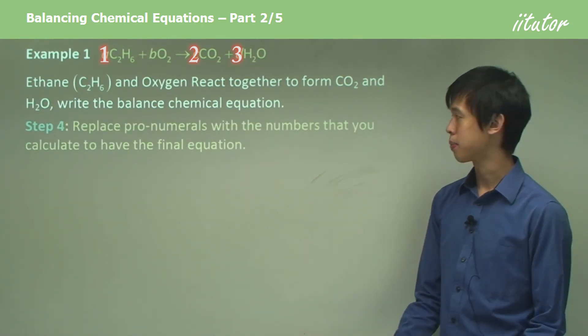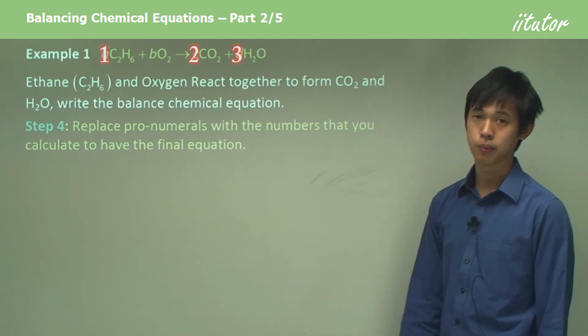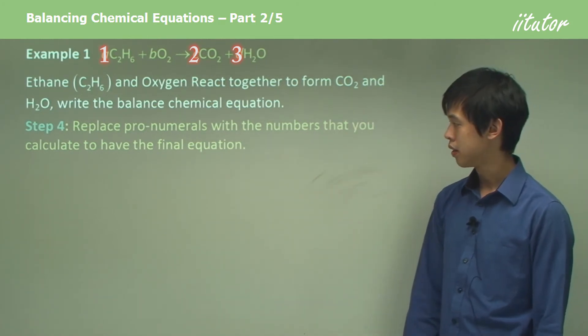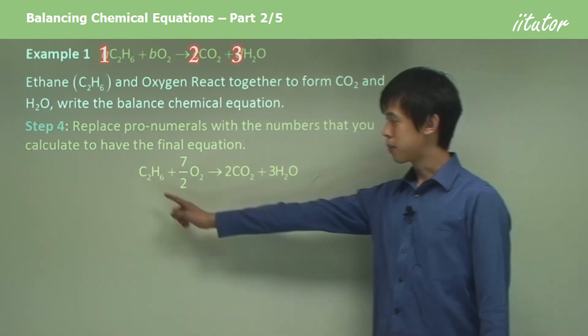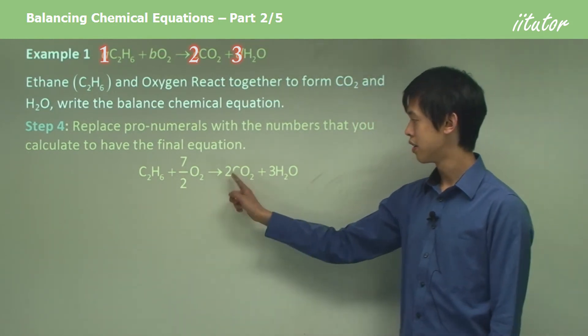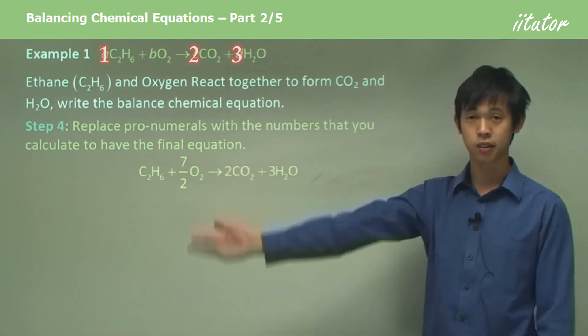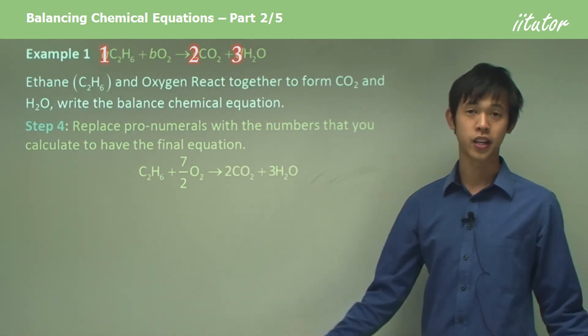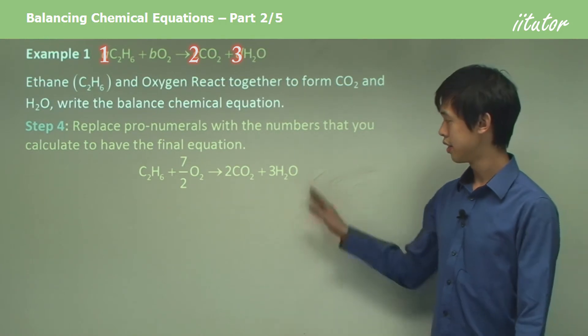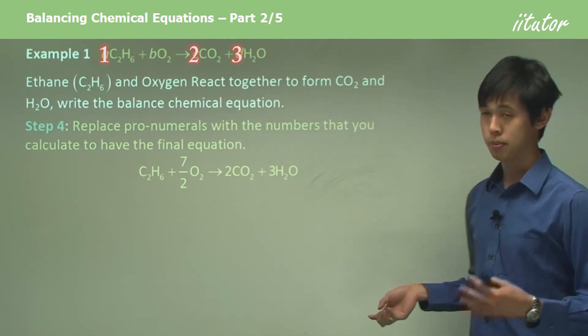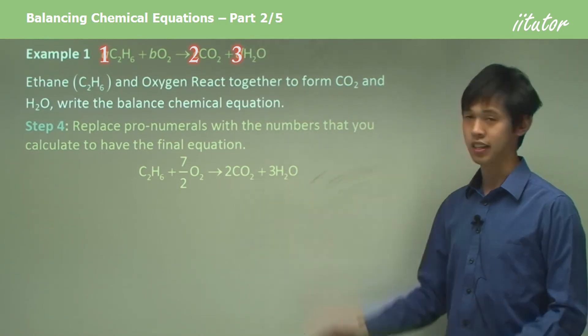Then we just replace the pronumerals with the numbers that we calculated from just before. So A equals 1, B equals 7 on 2, C equals 2, and D equals 3. And that's our final equation. And that's how we balance equations. Those are the three or four steps that we need. And that's how we get it.